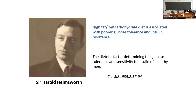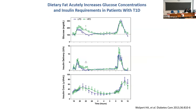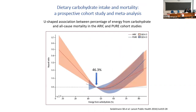If you have a high-fat, low-carb diet, Harold Himsworth was able to demonstrate in the past that such a diet is associated with poorer glucose tolerance and insulin resistance. This has been confirmed in recent studies in type 1 diabetes subjects comparing low-fat and high-fat meals: if you eat a high-fat diet, your insulin requirement is much higher to achieve metabolic control. Therefore, eating a high-fat, low-carb diet increases your insulin need and insulin resistance.